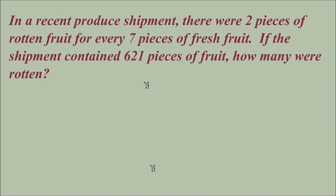In this problem, I first identified a fraction I could set up with the known information. And that was using that there are 2 pieces of rotten fruit for every 7 pieces of fresh fruit. Looking at the next sentence, the information there is using 621 pieces of total fruit and asking how many of those were rotten. The ratio that I'd like for my second fraction should use rotten fruit and total fruit, just looking at what information is given in this last sentence.